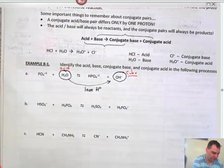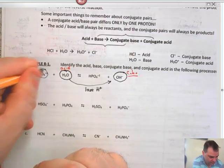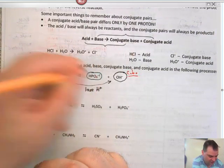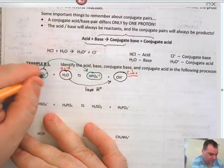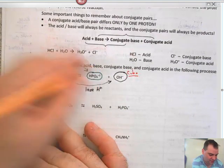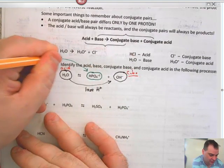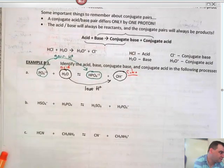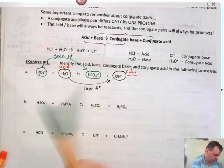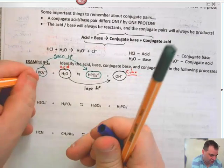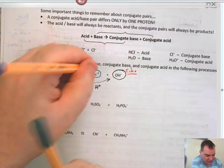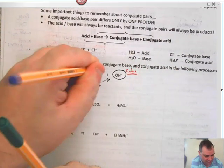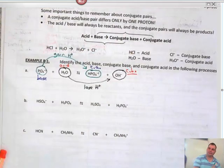Then we look at PO₄³⁻ and HPO₄²⁻. You can see that PO₄³⁻ has actually gained an H⁺, which makes PO₄³⁻ the base because it's on the reactant side. And bases go to conjugate acids. My conjugates are on the product side.